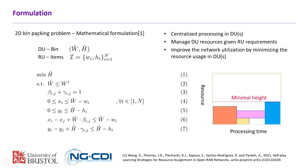For the mathematical formulation, we model this as a 2D bin packing problem. We have centralized processing in the DUs and the goal is to manage the resources given all the RU requirements, finding the packing strategy given all the items. We hope to improve network utilization by minimizing resource usage in DUs — specifically, given the processing time requirement, we want to use minimal resources, finding the minimal height of the bin to pack all items.